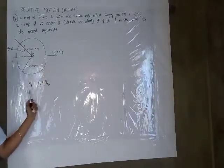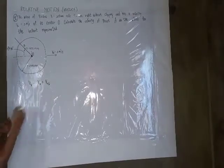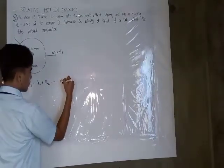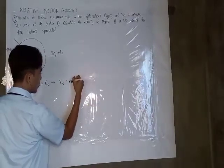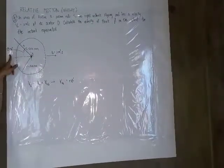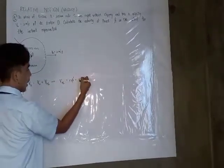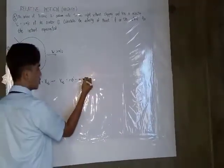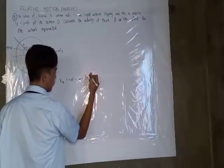We have two missing terms. For the velocity of A relative to O, we can find it — it is equal to the radius multiplied by theta prime (angular velocity ω). Note that theta prime here is not equal to the theta given directly; theta prime here refers to the angular velocity.